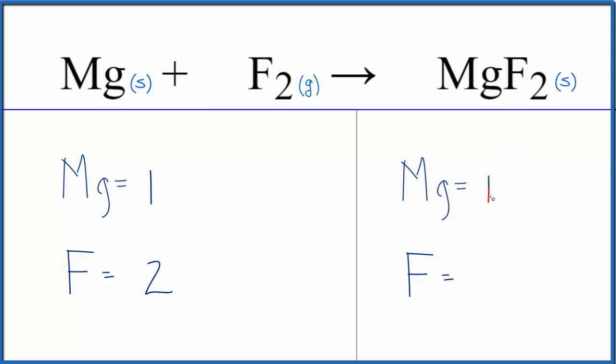Over here, one magnesium and two fluorine atoms. And you can see right away we have the same number of magnesium atoms and fluorine atoms on each side. This equation is already balanced.